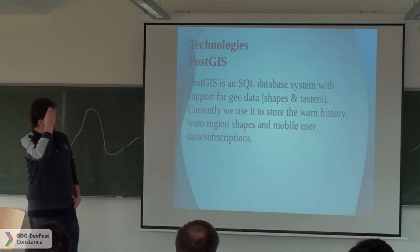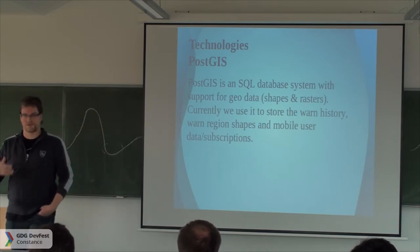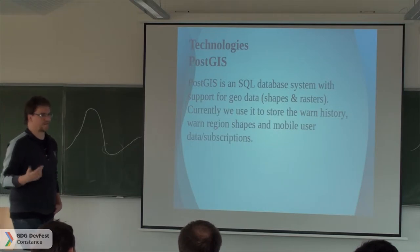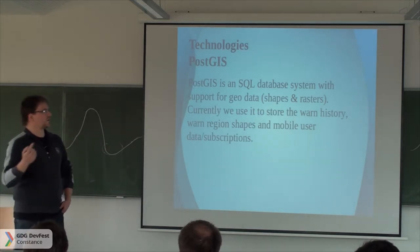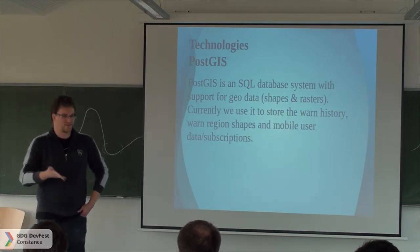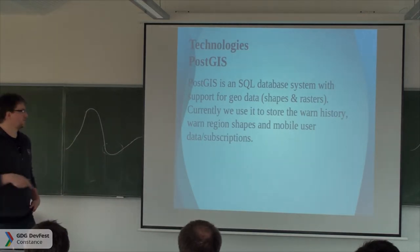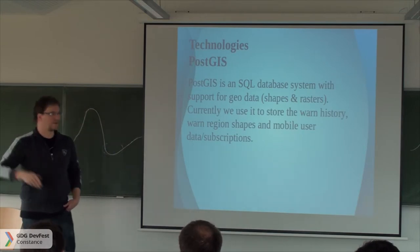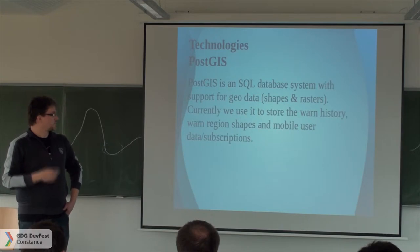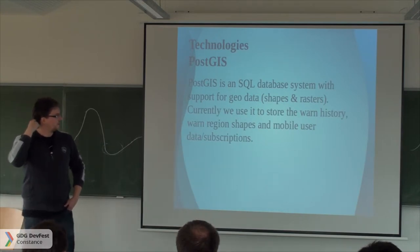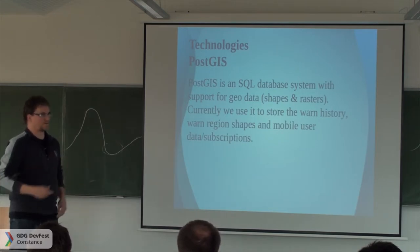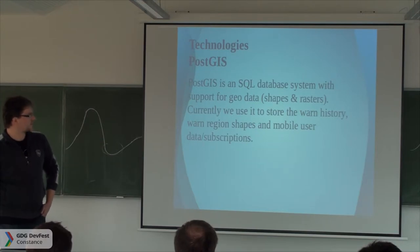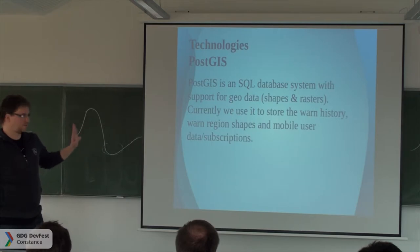On the back-end side, we also use PostGIS, which is a Postgres extension for geo data — it can handle shapes and rasters. That's mainly to determine what region the user is interested in. You can either use the region ID if you know it, or just provide geographic coordinates like longitude and latitude, and the system will find out which region it is and subscribe you to the right region. We also use it for mobile users to handle their subscriptions and make sure the same user gets subscribed to the same channels they had selected before.